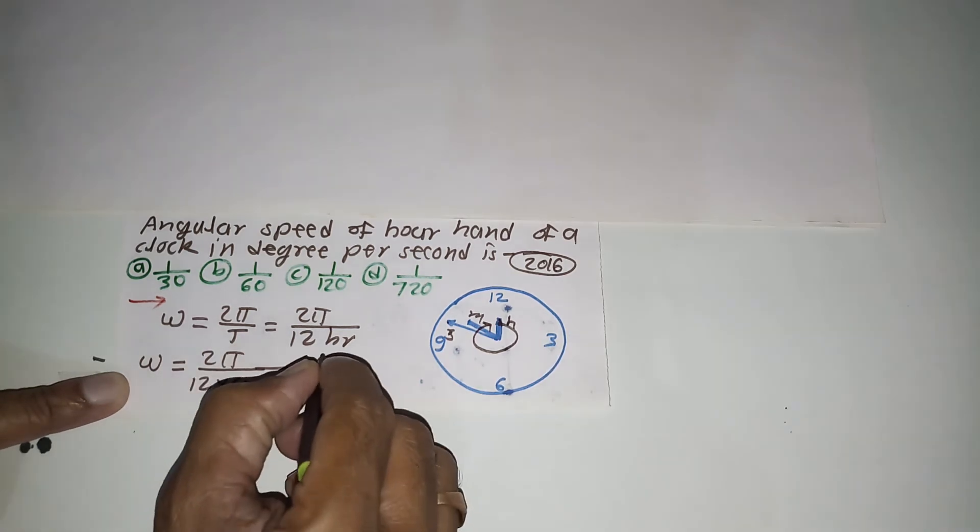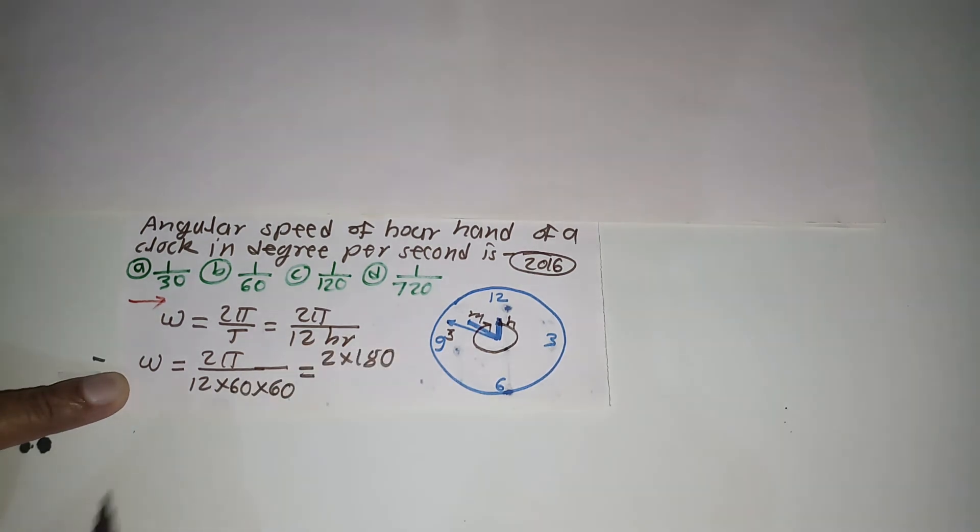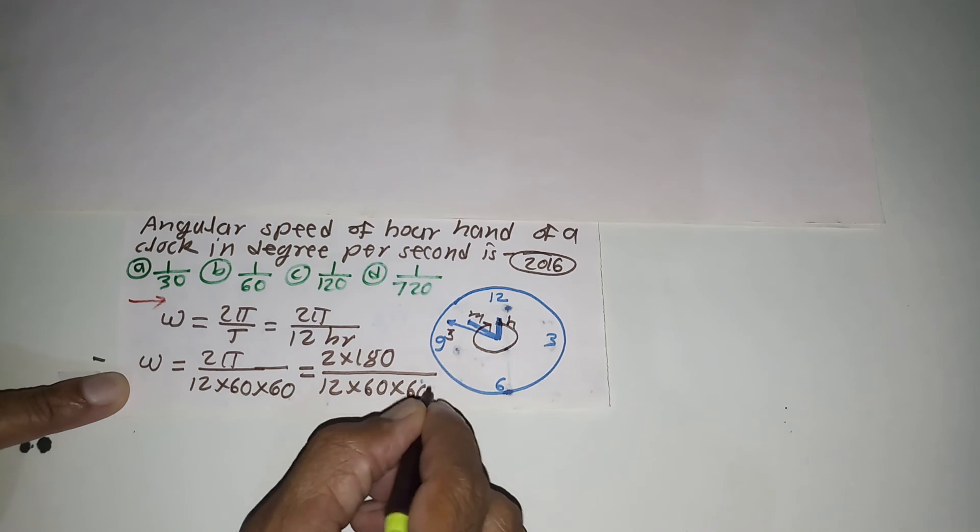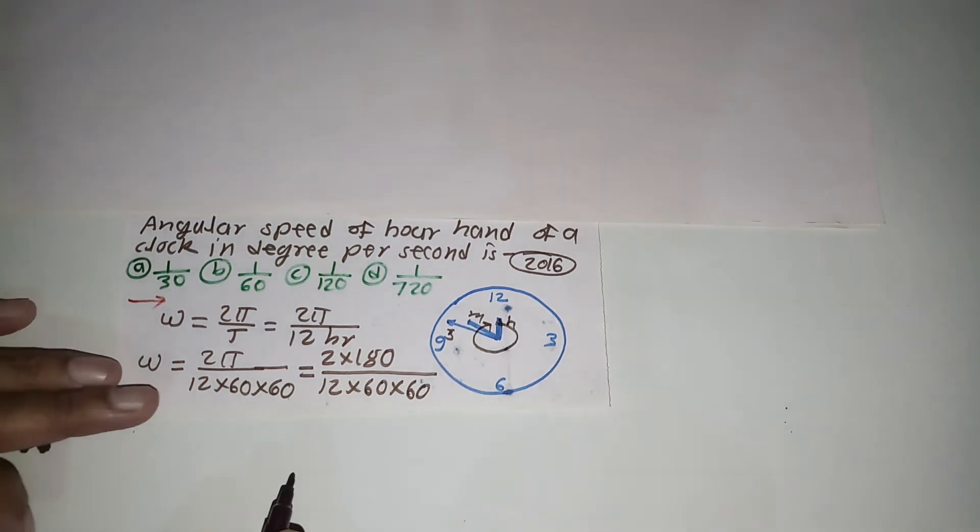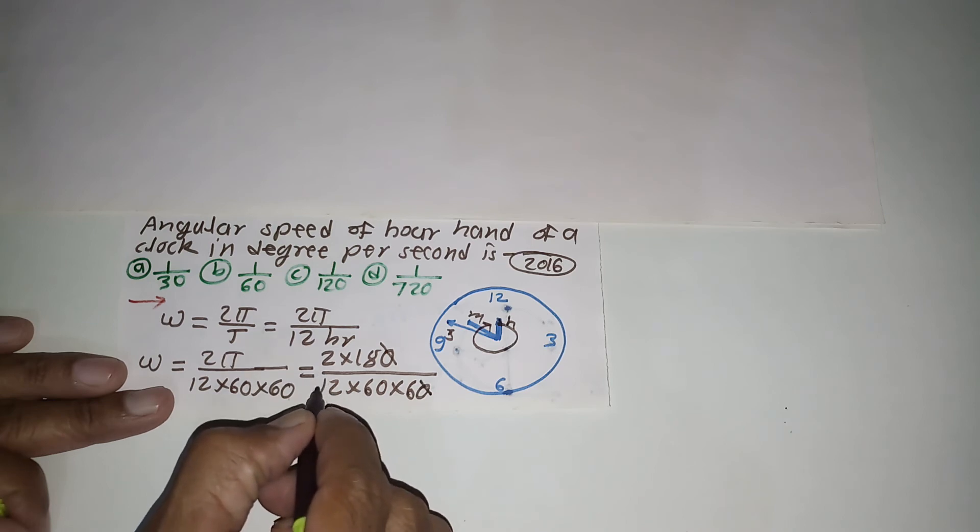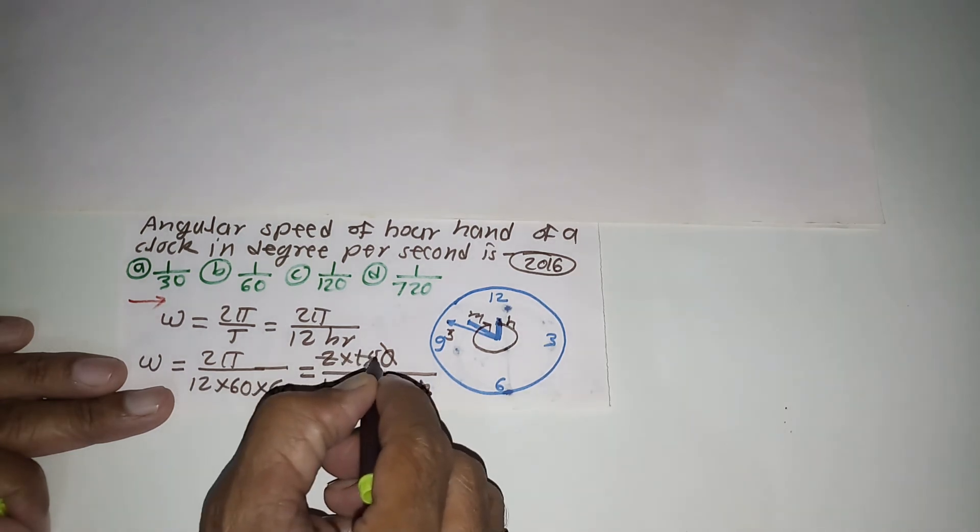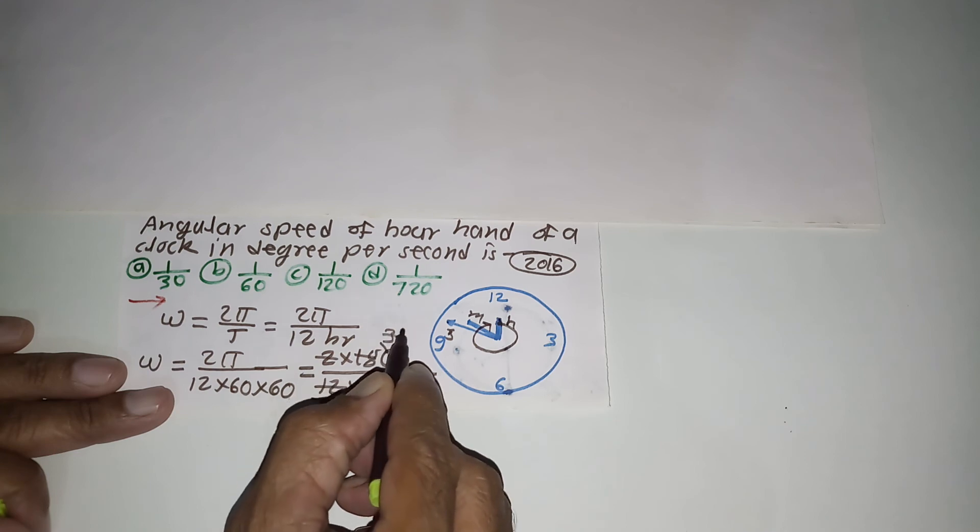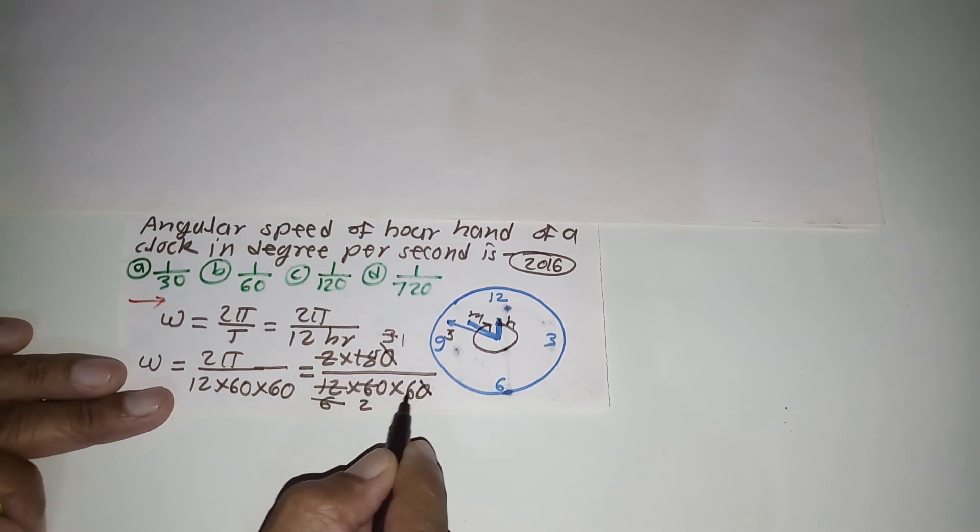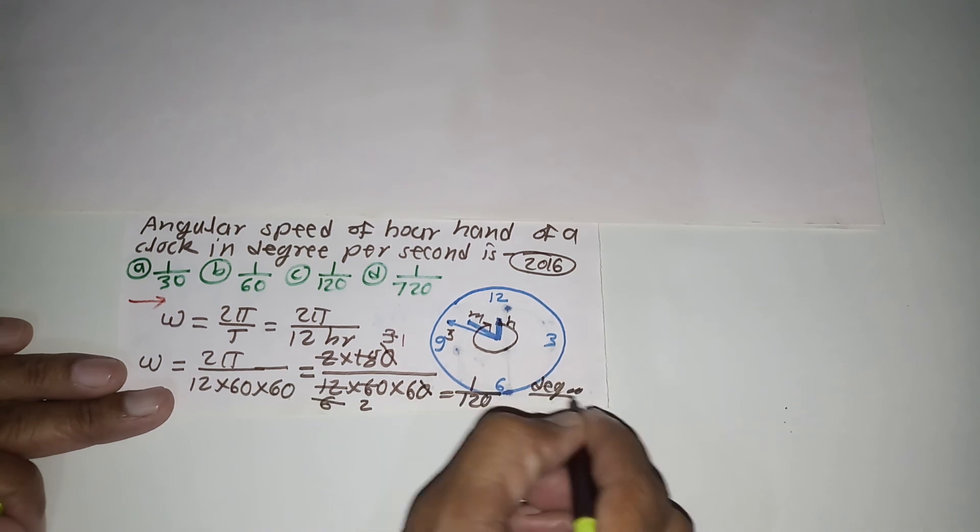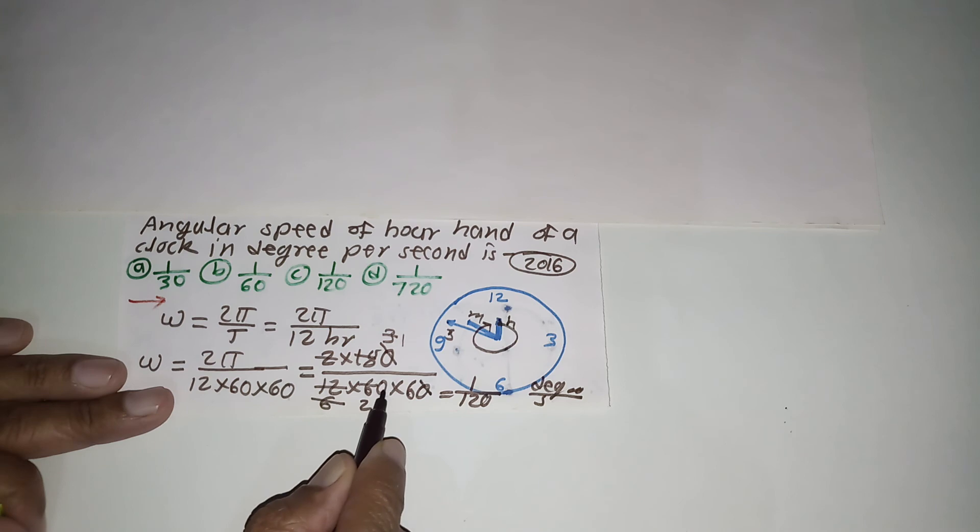This is equal to 2 into 180 degree upon 12 into 60 into 60. This value comes out in degree per second. One zero gets canceled, then we can divide 2 by 12 which gives 6, and 6 into 2 is 12, giving us 20 here. The total answer comes out to be 1 upon 120.